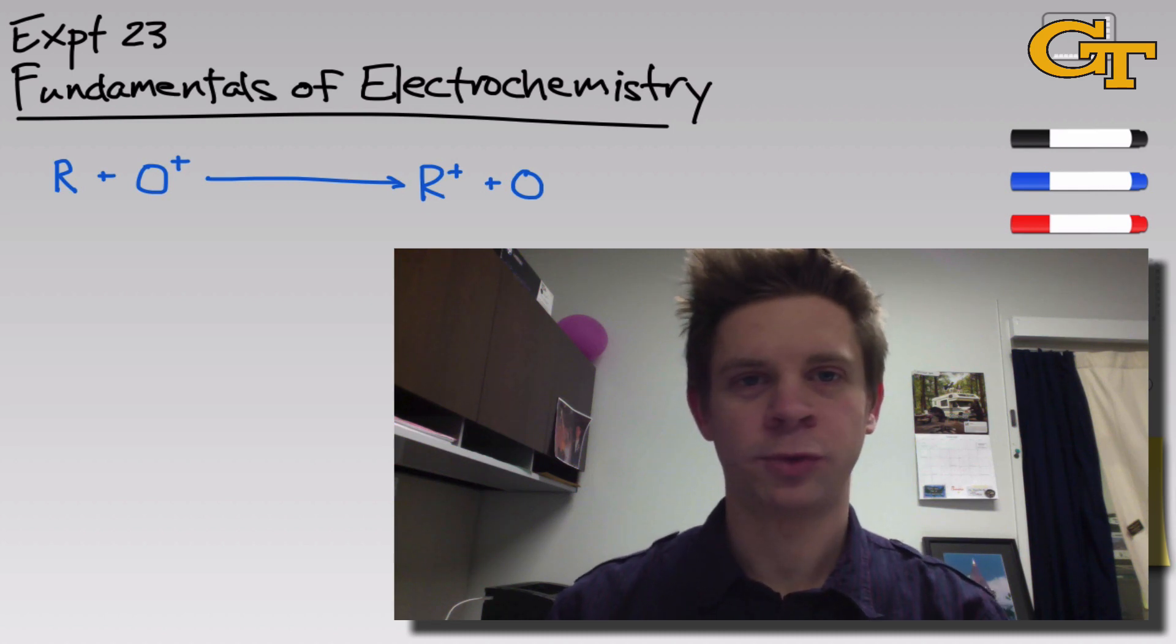Experiment 23 in Chem 1212 is titled Fundamentals of Electrochemistry. In this experiment, you'll come face-to-face with some of the characteristics and applications of electron transfer or redox reactions, which involve the transfer or movement of an electron from one reagent that we call the reductant to another that we call the oxidant.